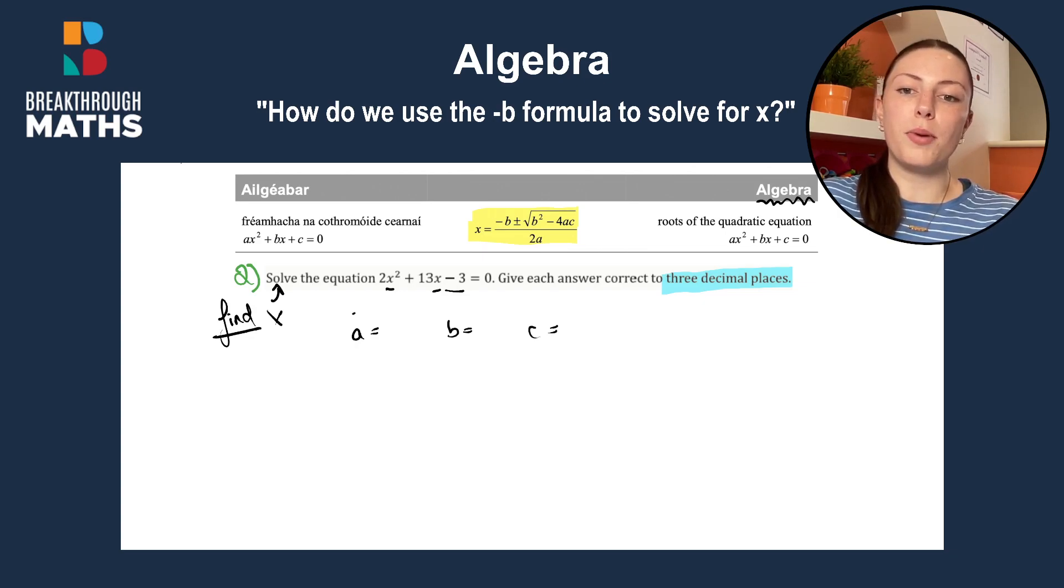So a is always the number in front of the x squared, b is always the number in front of x and c is always the number by itself. So that means that a is going to be 2, b is going to be 13, and c is going to be minus 3.